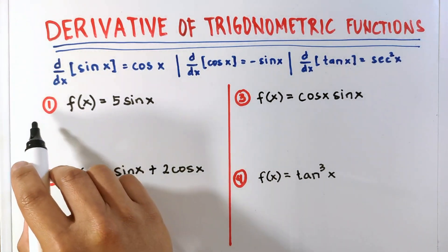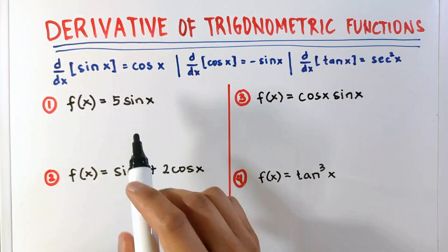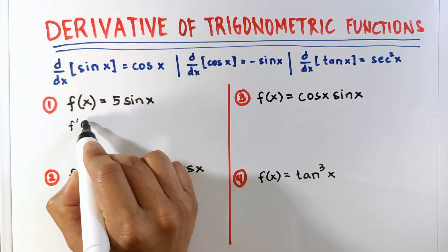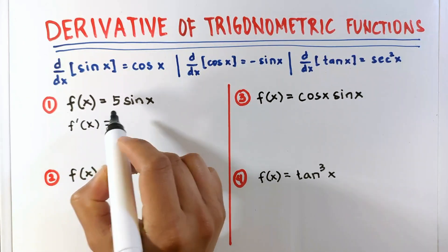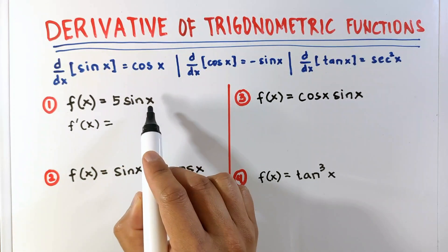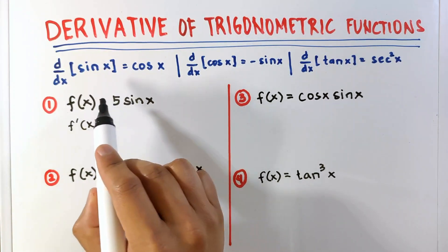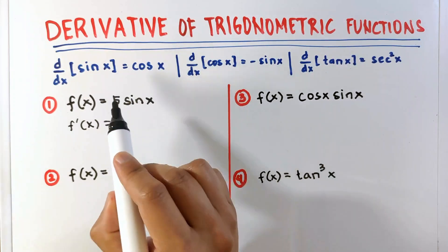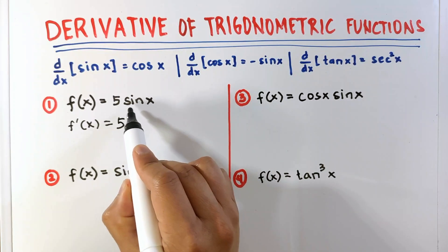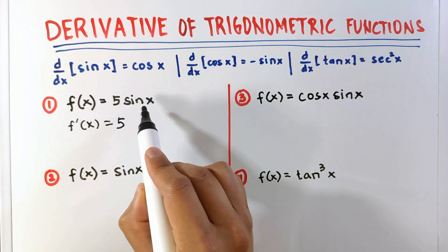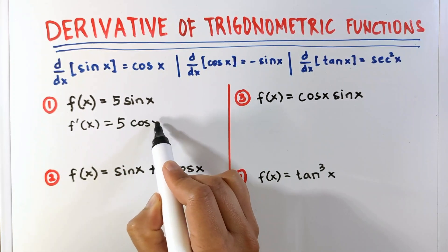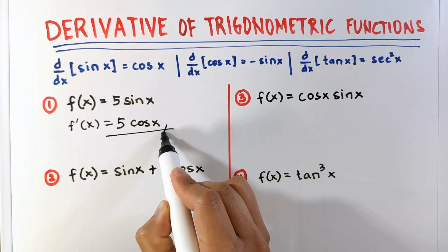For examples, item number 1: f of x equals 5 sin x. The derivative of the function is equal to — since we have a constant times a function, the constant multiple rule will apply here. So we simply need to copy 5 and multiply it by the derivative of sin x, which is cosine x. And that's it. This is the derivative of the function.